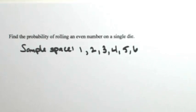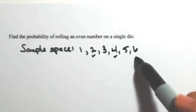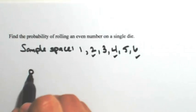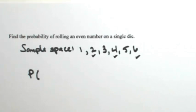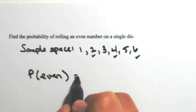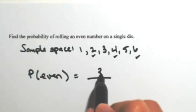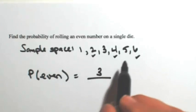Those are all the possibilities. Of these six, how many are even? Well, two, four, and six. So the probability, using this notation, probability of rolling an even number is three ways out of six possibilities.